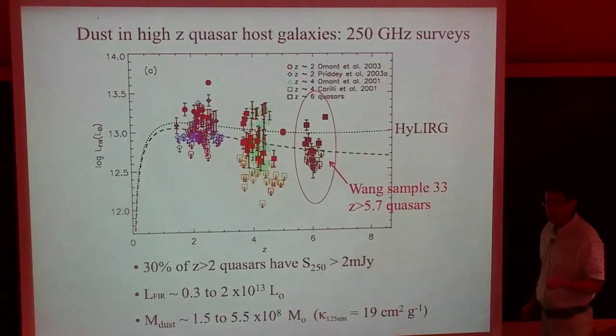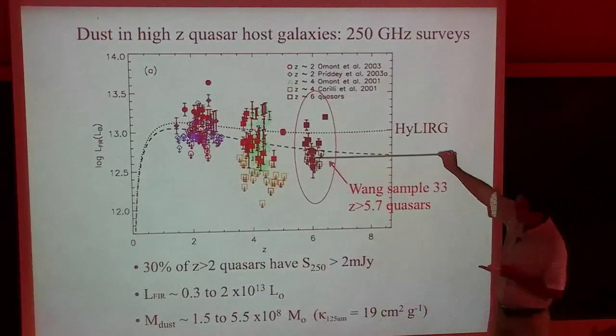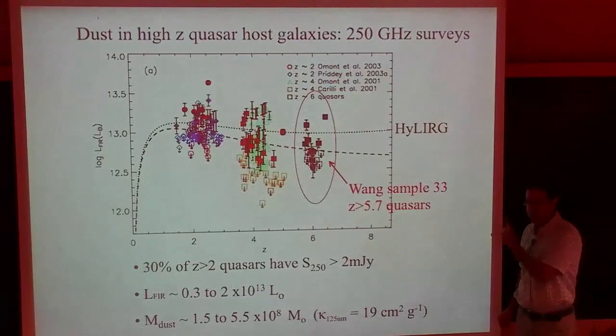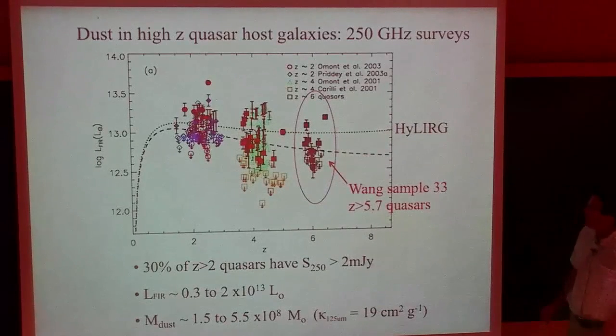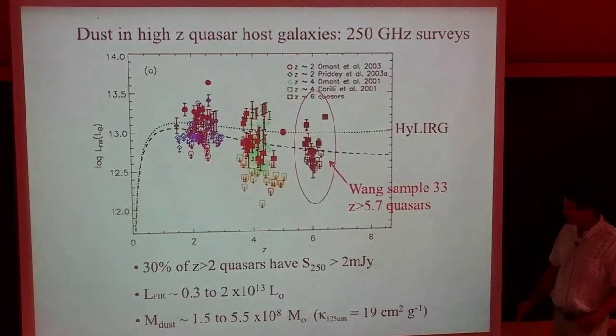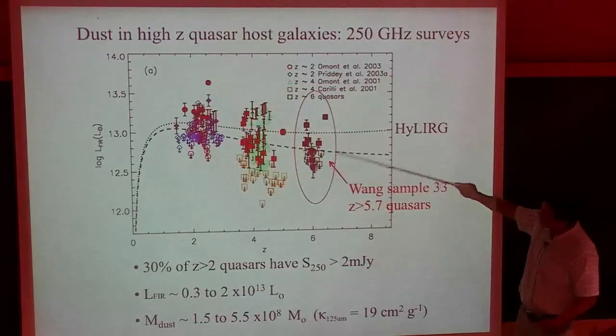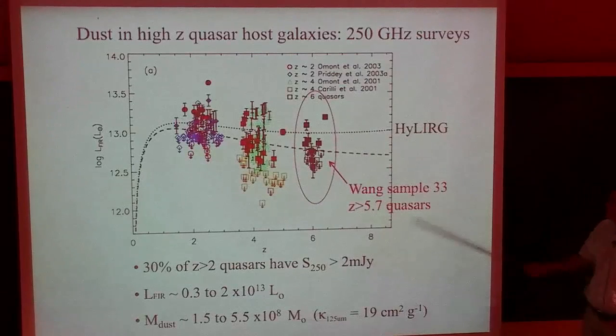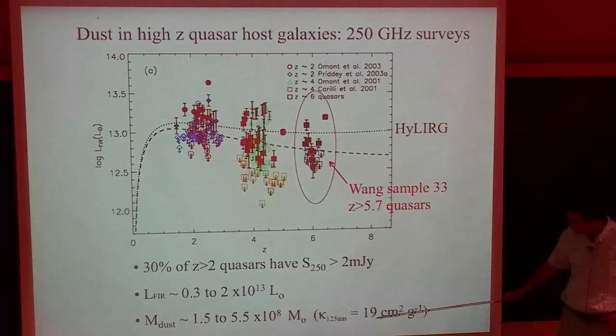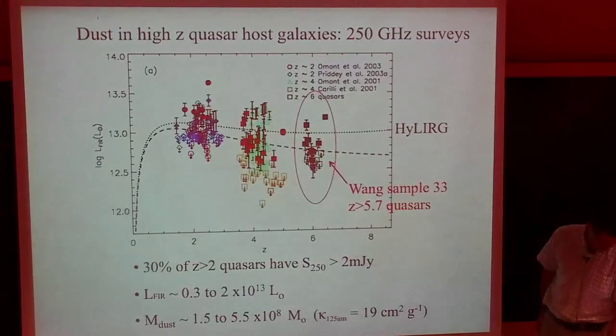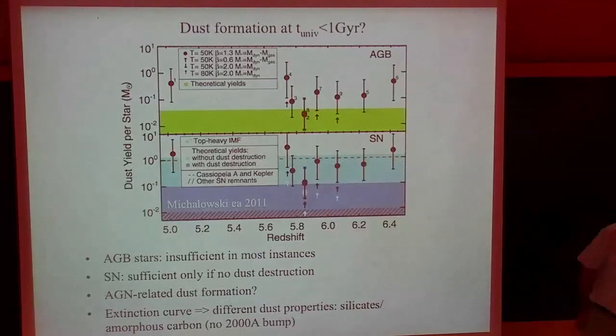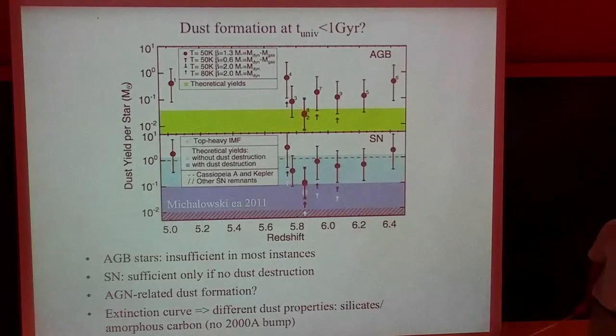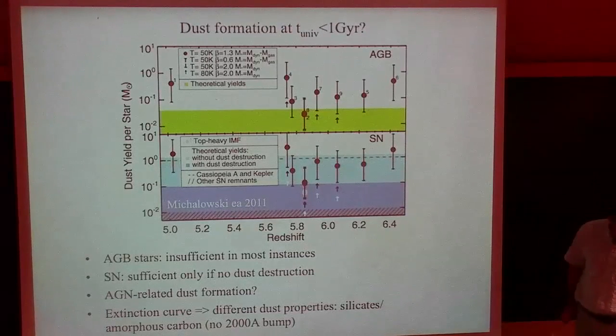Our surveys start with 250 gigahertz surveys of the dust continuum emission. We observed hundreds of quasars at redshift 2, 4, and 6. You detect about a third of the quasars at more than two millijanskys at 250 gigahertz, basically independent of redshift. If you adopt a spectrum you can turn two millijanskys into a luminosity. That demonstrates the inverse K correction - the fact that if you fix your observing frequency and you fix your flux density limit, you get a fixed luminosity. So we have a distance-independent way of studying objects in the universe. The important point is the one-third detection fraction at redshift six.